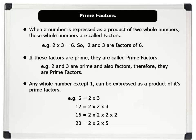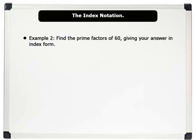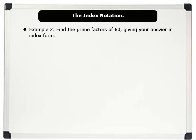Let's see the index notation. We use the index notation to show repeated multiplication of the same number. For example, when the number 2 is multiplied 5 times as shown on the board, we can use the index notation to write it as 2 to the power of 5. Note that 2 to the power of 5 equals 32.